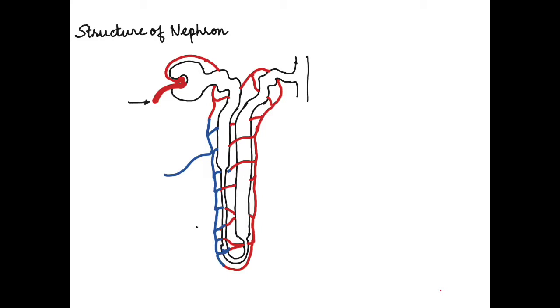The first part is the arteriole that enters inside the Malpighian corpuscle, the cup-shaped structure. This is called the efferent arteriole. The efferent arteriole carries blood into the network of capillaries in the cup-shaped structure, and it moves out as the efferent arteriole.